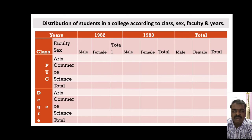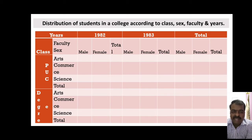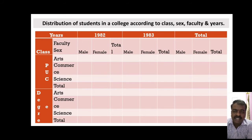When we come to the streams, in PUC we have arts, commerce, and science. Similarly for degree, we have arts, commerce, and science. Further, classifying students on the basis of gender, we have male, female, and total. So in the year 1982, we can find the total number of male students who studied arts at PUC, total number of female students who studied arts at PUC, and so on. Like this, we can classify the table on the basis of each and every characteristic.